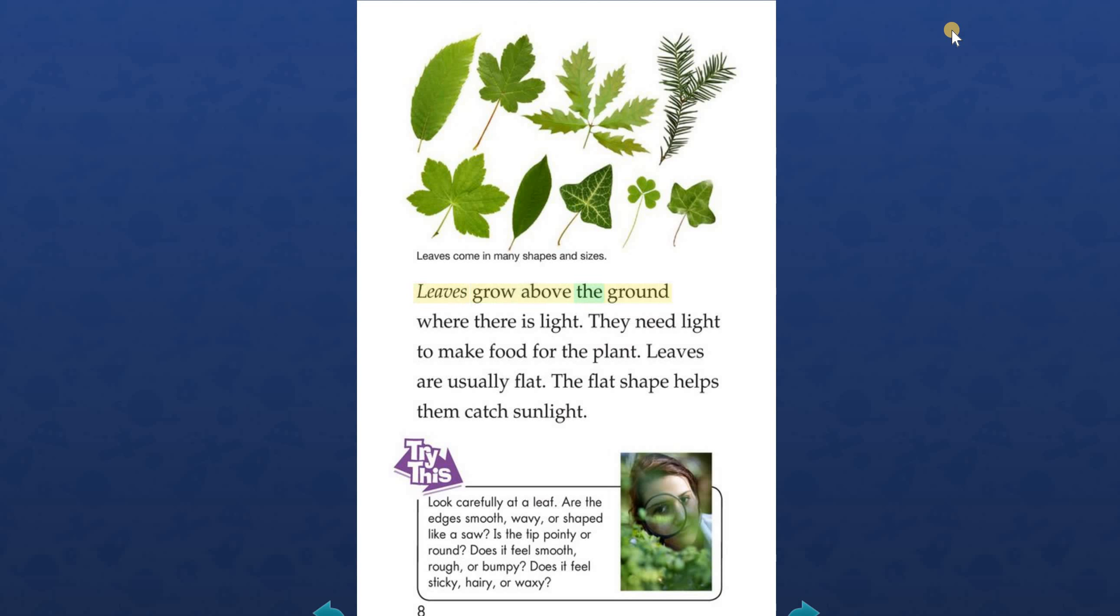The leaves grow above the ground where there is light. They need light to make food for the plant. Leaves are usually flat. The flat shape helps them catch sunlight. Try this: Look carefully at a leaf. Are the edges smooth, wavy, or shaped like a saw? Is the tip pointy or round? Does it feel smooth, rough, or bumpy? Does it feel sticky, hairy, or waxy?